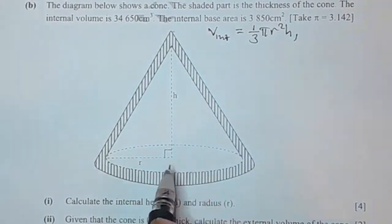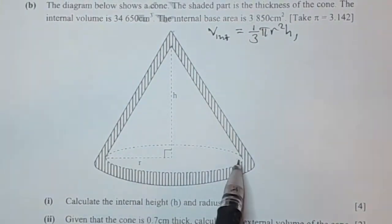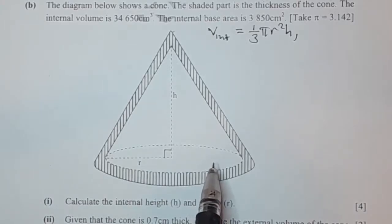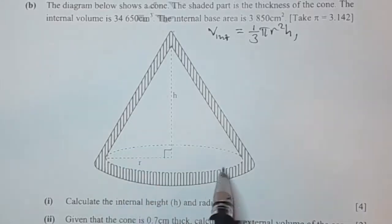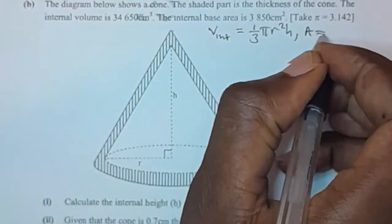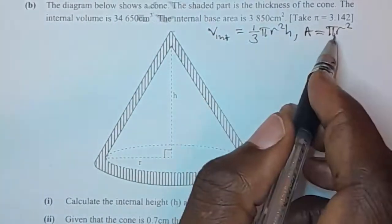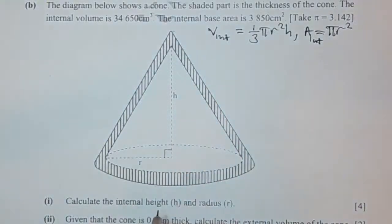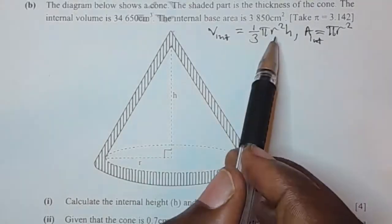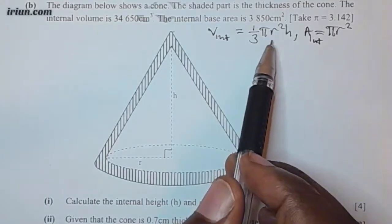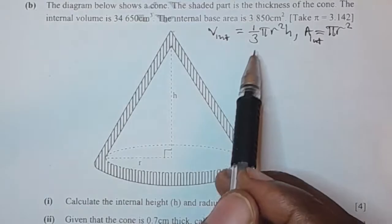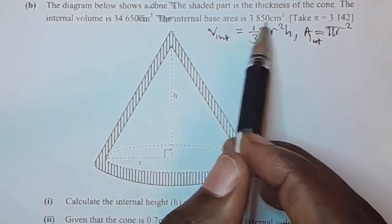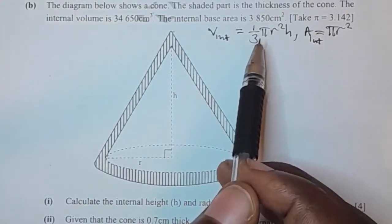We've also been given the base area. The base of this cone is a circular base, so we are going to use the formula for the area of a circle: area equals pi r squared. Now, in the first volume formula we have two unknowns — radius and height — so we cannot use it directly. Instead, we'll use the base area formula which has only one unknown, which is the radius.